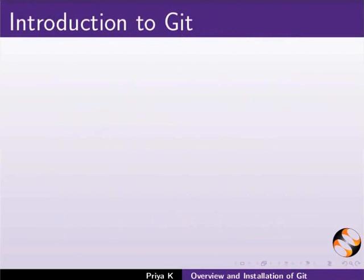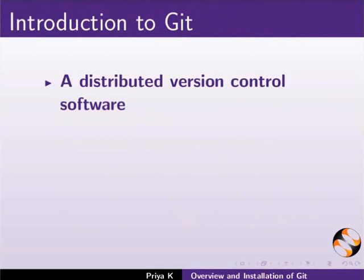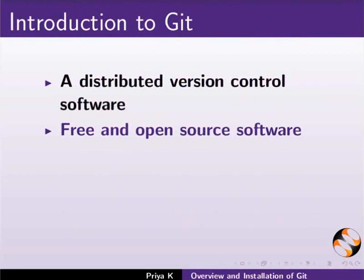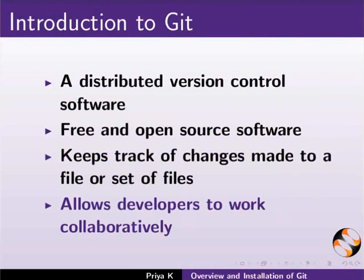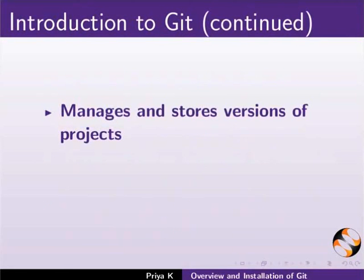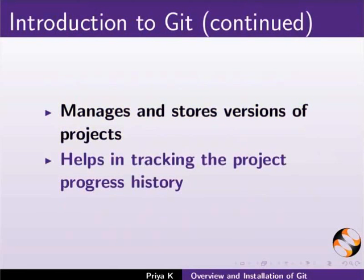Next let us start with Git. Git is a distributed version control software. It is a free and open source software. It keeps track of changes made to a file or set of files. It allows developers to work collaboratively. It manages and stores versions of projects and helps in tracking the project progress history.